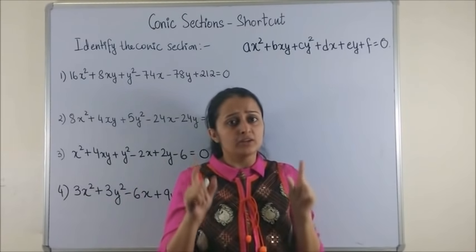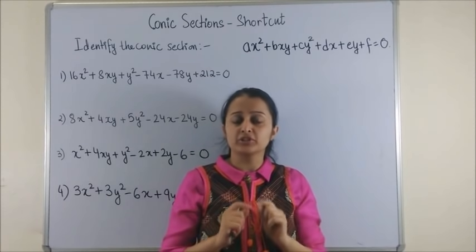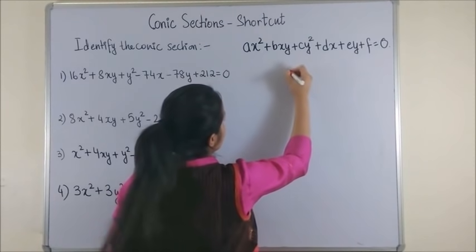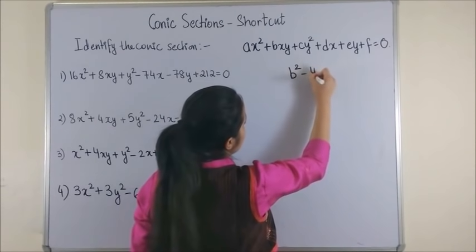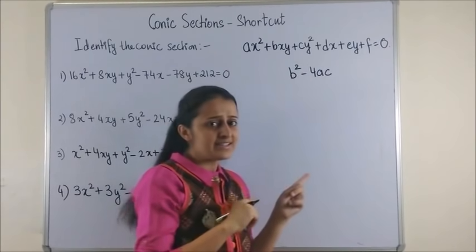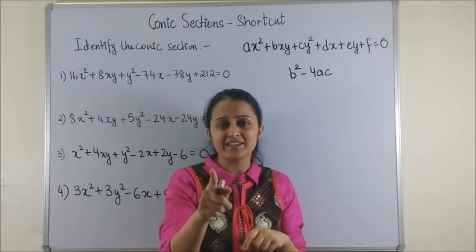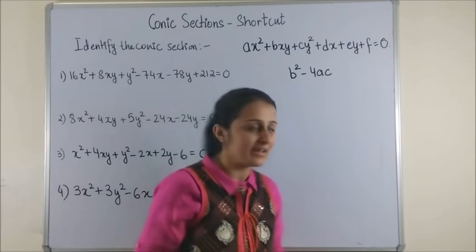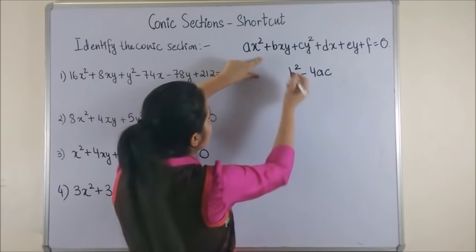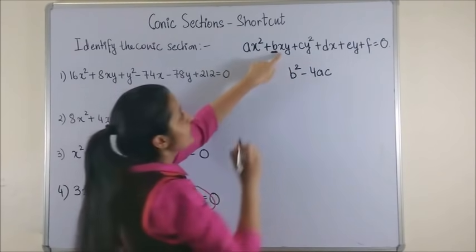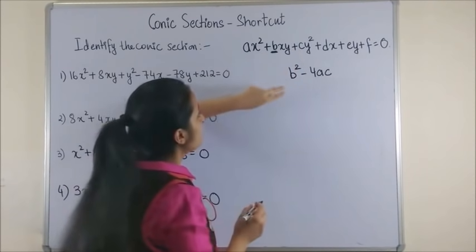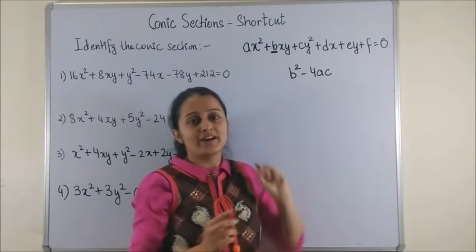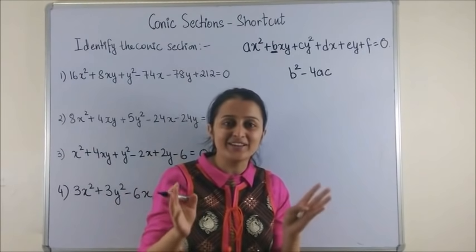The moment you come across this situation, what are you supposed to do? Just one step. You would check for the expression b² - 4ac. Doesn't that remind you of your discriminant? Yes, this is also known as the discriminant method. So what we are doing is this b² is basically the coefficient of xy, and a and c are the coefficients of x² and y². That is it, that's all we need.